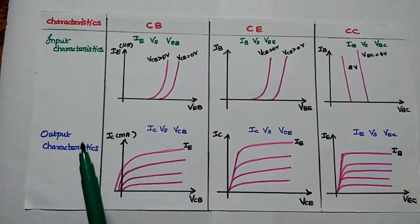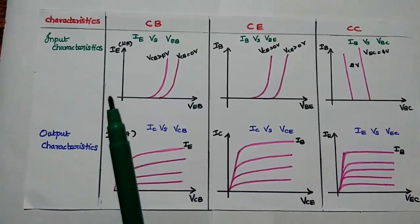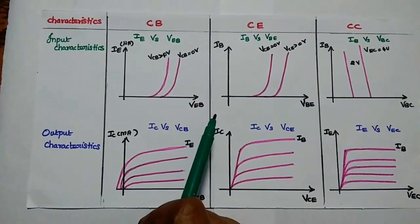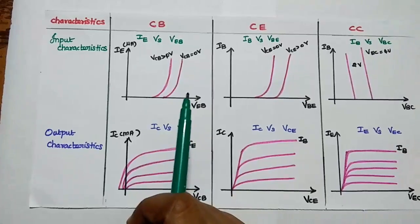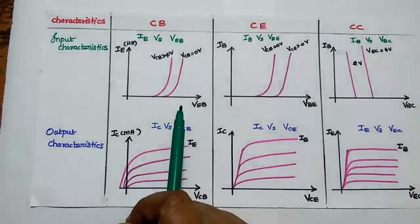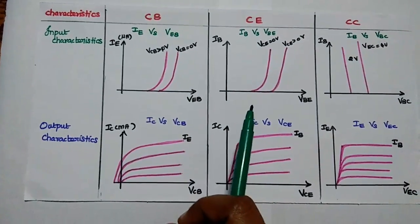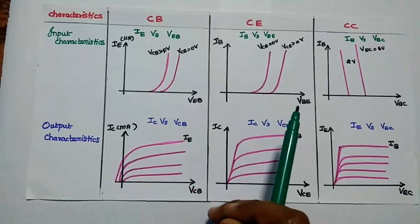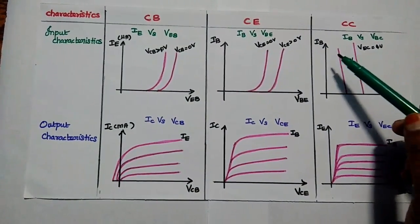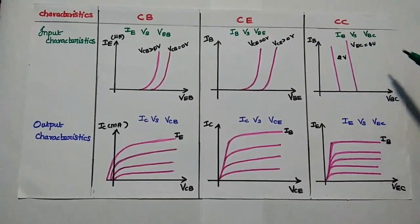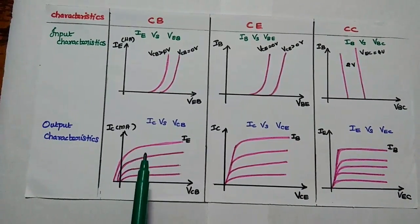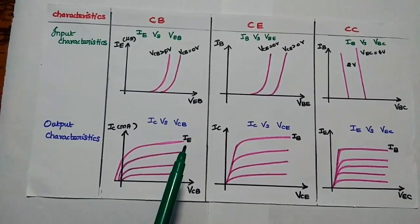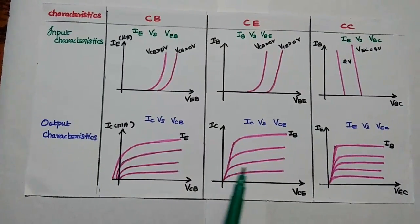Finally, we discuss input and output characteristics of CB, CE, and CC configurations. For common base, the input characteristics curve is drawn between emitter current and input voltage VEB, keeping output voltage VCB constant. For common emitter, input characteristics are analyzed between IB and VBE. For common collector, input characteristics are drawn between base current and input voltage VBC. The output characteristics for each are drawn between output current versus output voltage, with input current held constant.